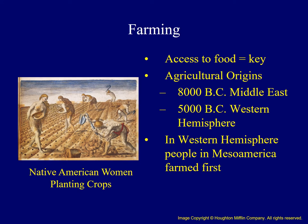One of the most important traits influencing the development of the differences between Indian nations was the ability to produce food surpluses. This usually was associated with climate and particularly agriculture. While people first domesticated plants in the Middle East about 8,000 BC, in the Western Hemisphere it happened about 5000 BC, not in North America, but in Mesoamerica.